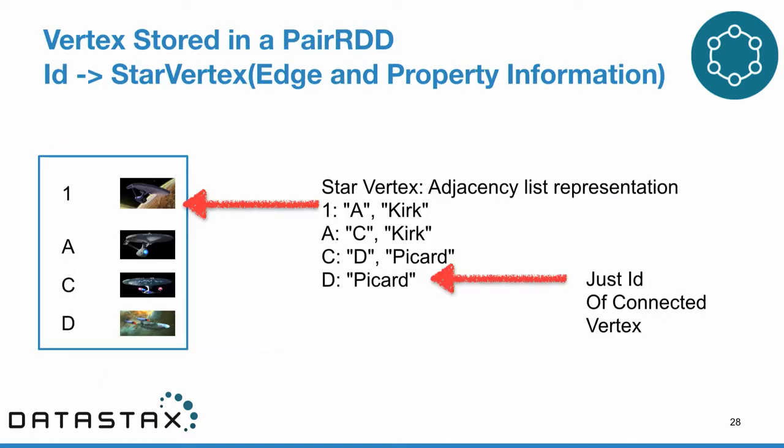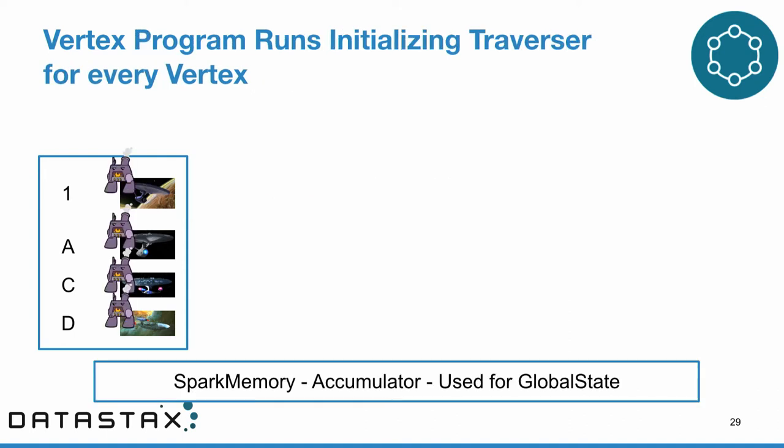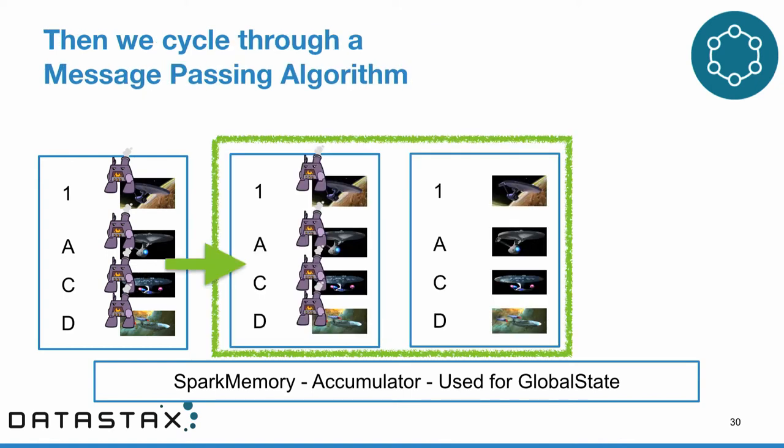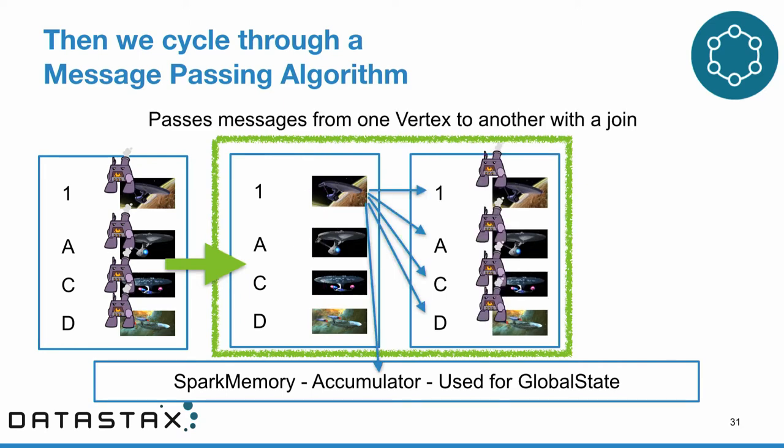Before we can do that, distributing the data requires some partitioning. In TinkerPop we build a pair RDD where one side is the ID for the vertex, and the other side contains all information about that vertex and its outgoing edges. This gives us a basic adjacency list representation where everything about a vertex — all its properties and the properties of its edges — is directly accessible without a shuffle. But to go from one vertex to another requires a shuffle to match the edge's destination ID to the ID column of our pair RDD.